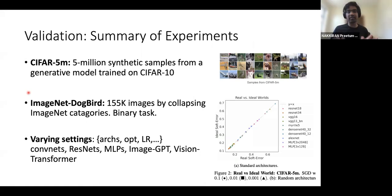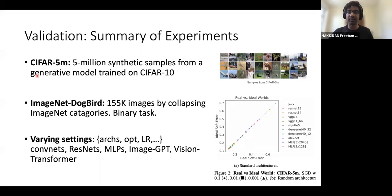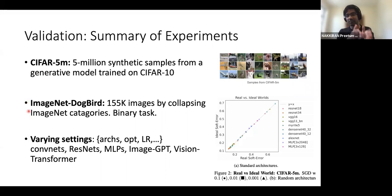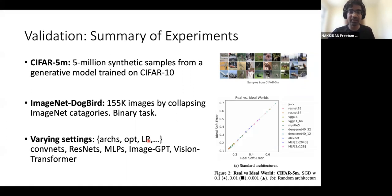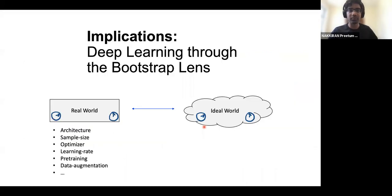We try to show experimentally that this bootstrap error is small across a variety of settings. To simulate the ideal world we need lots of samples, so we use a good generative model for CIFAR and sample it five million times, and we also use ImageNet where we subsample ImageNet for the real world and use the entirety of ImageNet to simulate the ideal world. Across these settings we vary the architecture, optimizer, learning rate, and loss function, showing the bootstrap gap remains small.